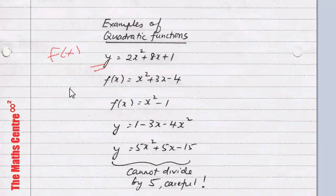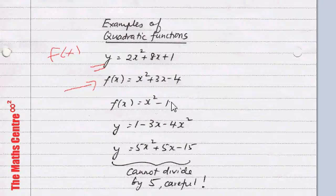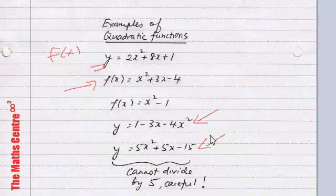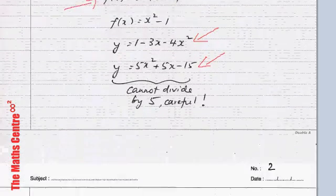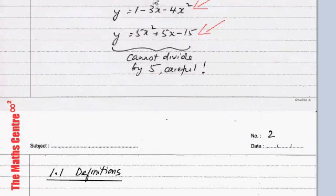I've written a few examples here: f of x equals to x squared plus 3x minus 4. These are all functions. We have a function like x squared minus 1, and y equals to 1 minus 3x minus 4x squared. Now, this is a very important point: if I give you y equals to 5x squared plus 5x minus 15, please remember you cannot divide the whole thing by 5 and make it simpler.